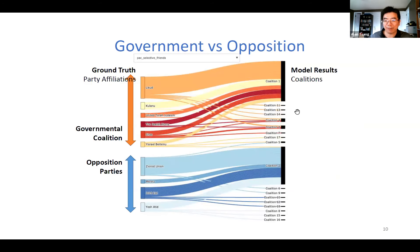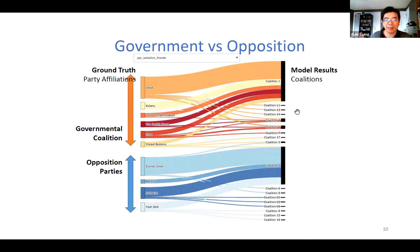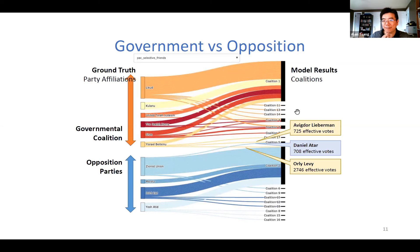We use a PAC (Probably Approximately Correct) model that outputs coalitions which are probably approximately correct. On the left we have ground truth — the actual party affiliations, with the governmental coalition in warmer tones and opposition in cooler tones. On the right, a Sankey flow diagram shows that our model approximately splits the governmental coalition from the opposition parties.